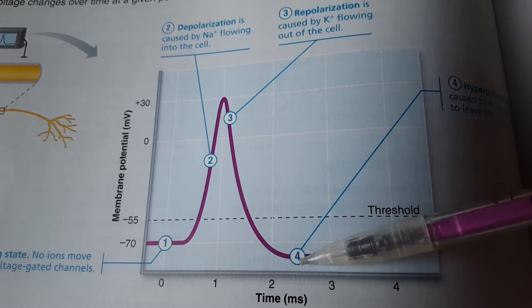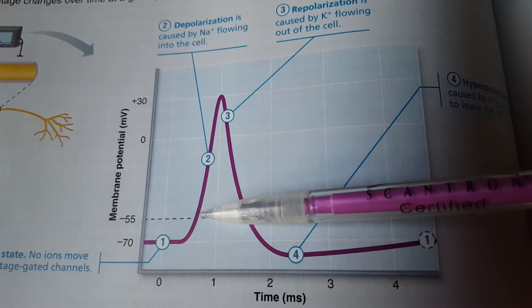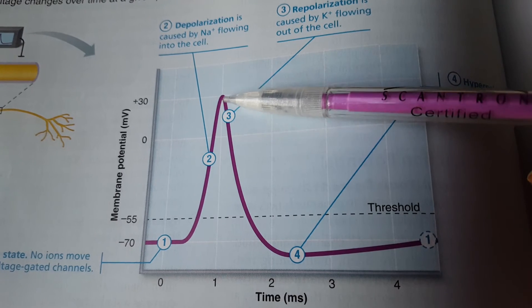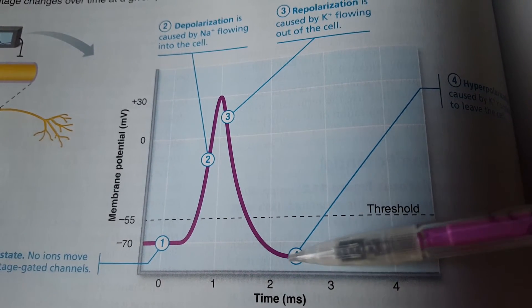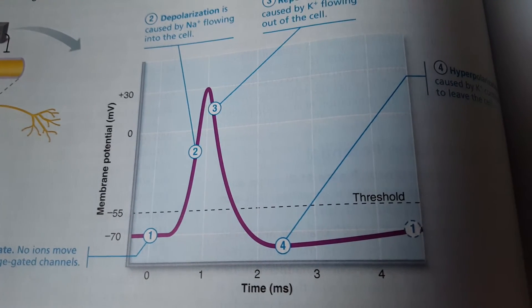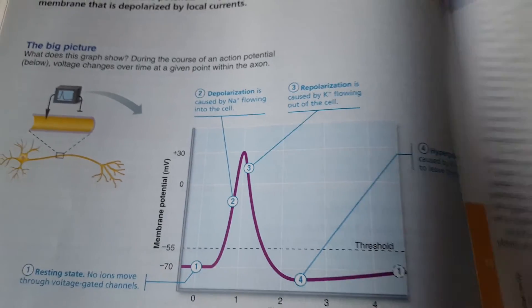So again we have depolarization dependent upon hitting threshold, depolarization, repolarization, hyperpolarization, and then the resting membrane potential is reestablished by the sodium-potassium pump.